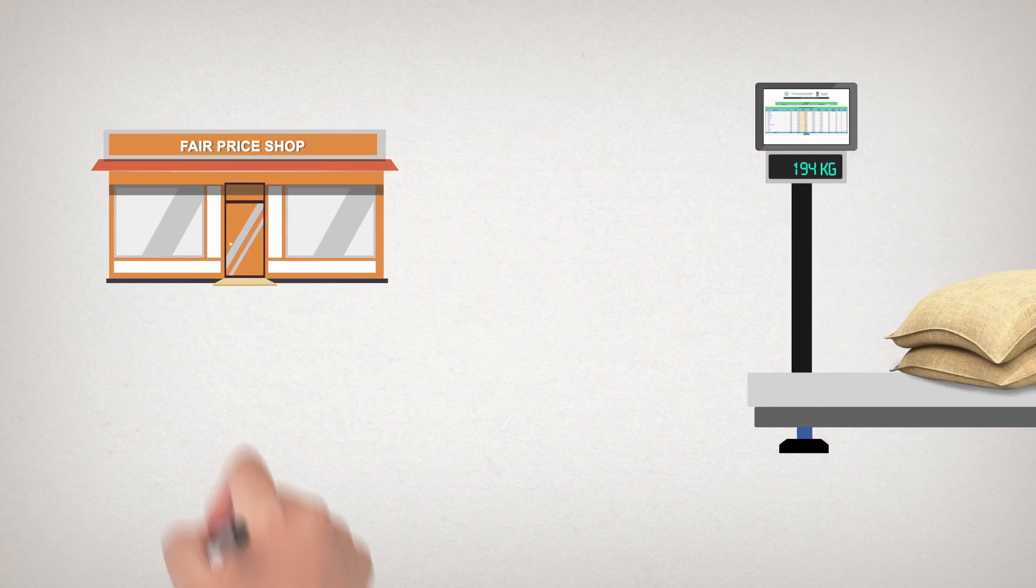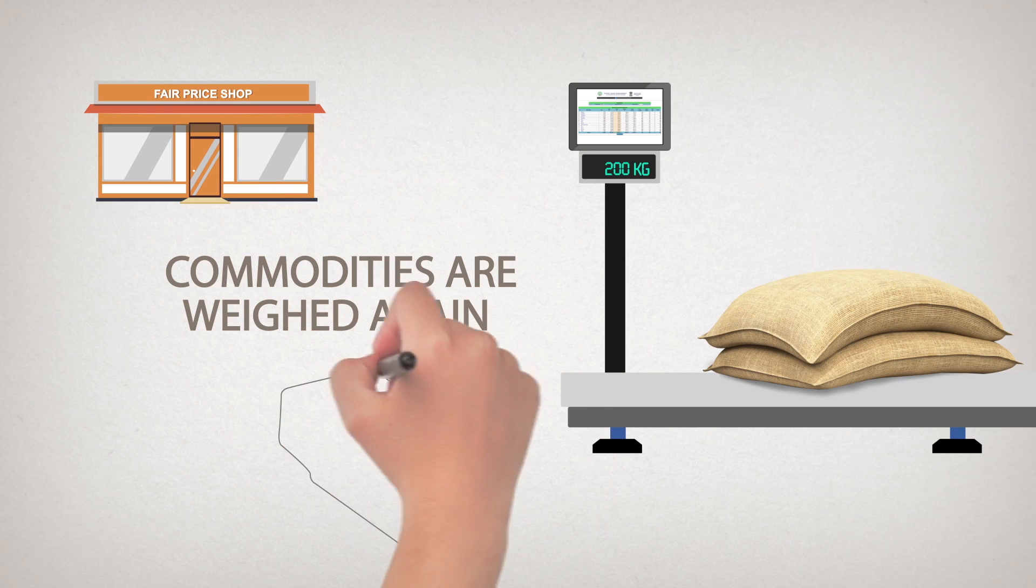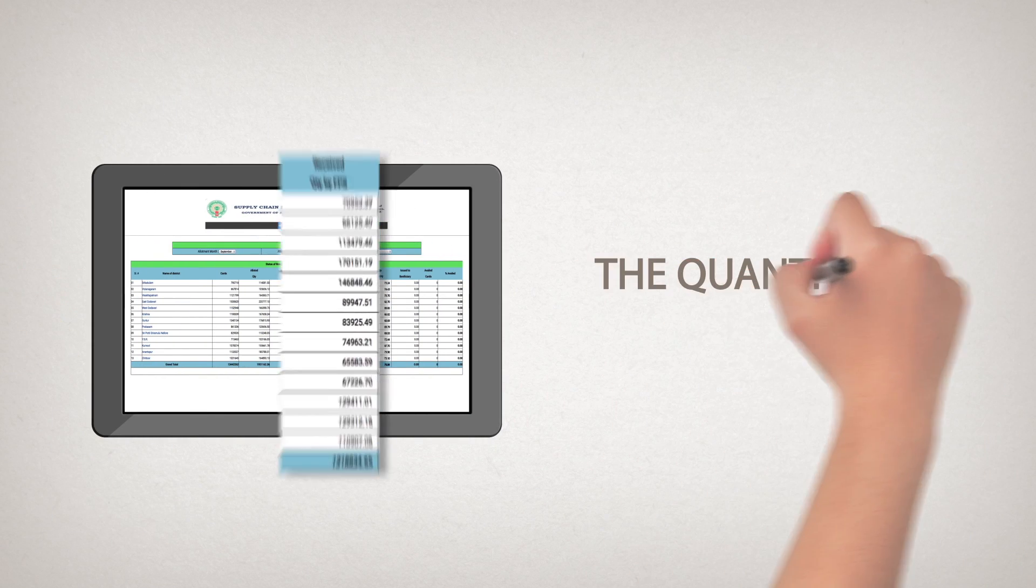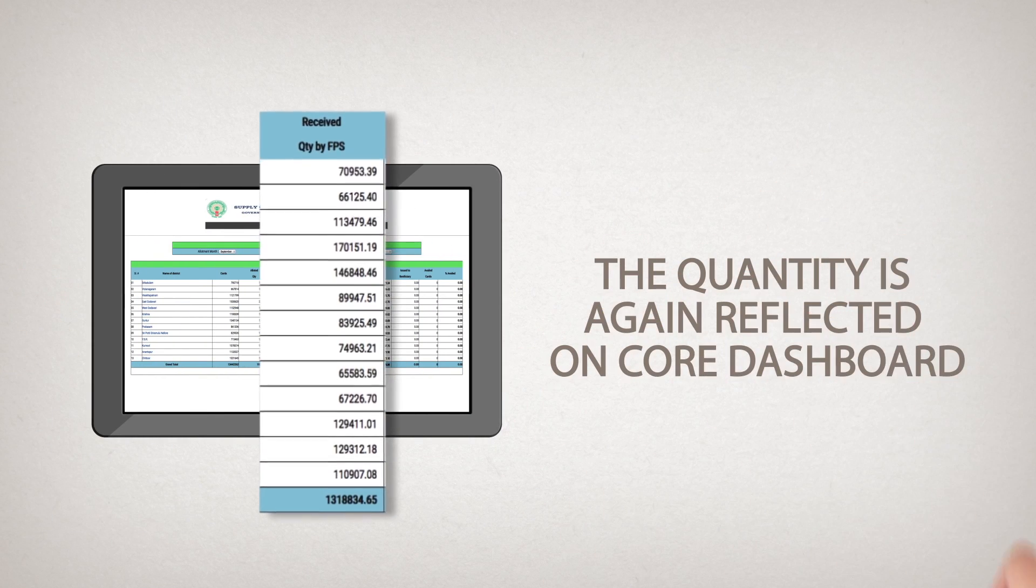Once received at fair-price shop, the commodities are weighed again on an EPOS machine connected to a weighing scale. The received quantity is again reflected real-time on Core Dashboard.